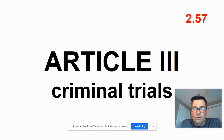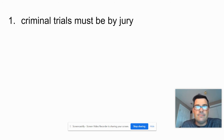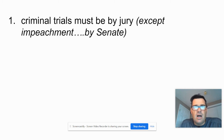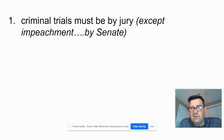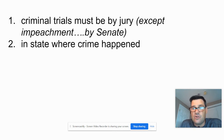Card 2.57 — Article 3, criminal trials. Article 3 has a section about criminal trials. Criminal trials must be by jury — interestingly, this is kind of repeated in the Bill of Rights. There is one exception: impeachment. The trial for impeachment is done in the Senate, which isn't really a jury because it's political. Criminal trials must also be held in the state where the crime happened.